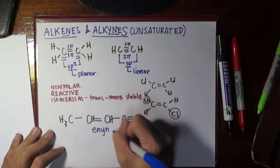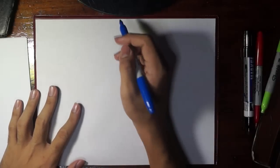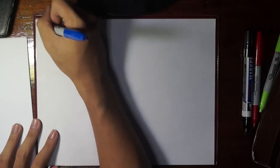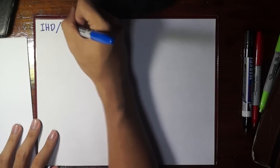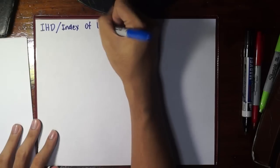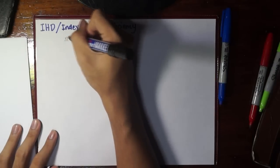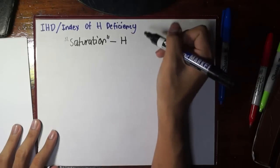Sometimes in classes we're given a certain molecular formula and asked: does this have double bonds, triple bonds, does this form a ring? How are we supposed to know that? The first thing we have to know is the term that would help us in knowing that. This is actually the term IHD or the Index of Hydrogen Deficiency.